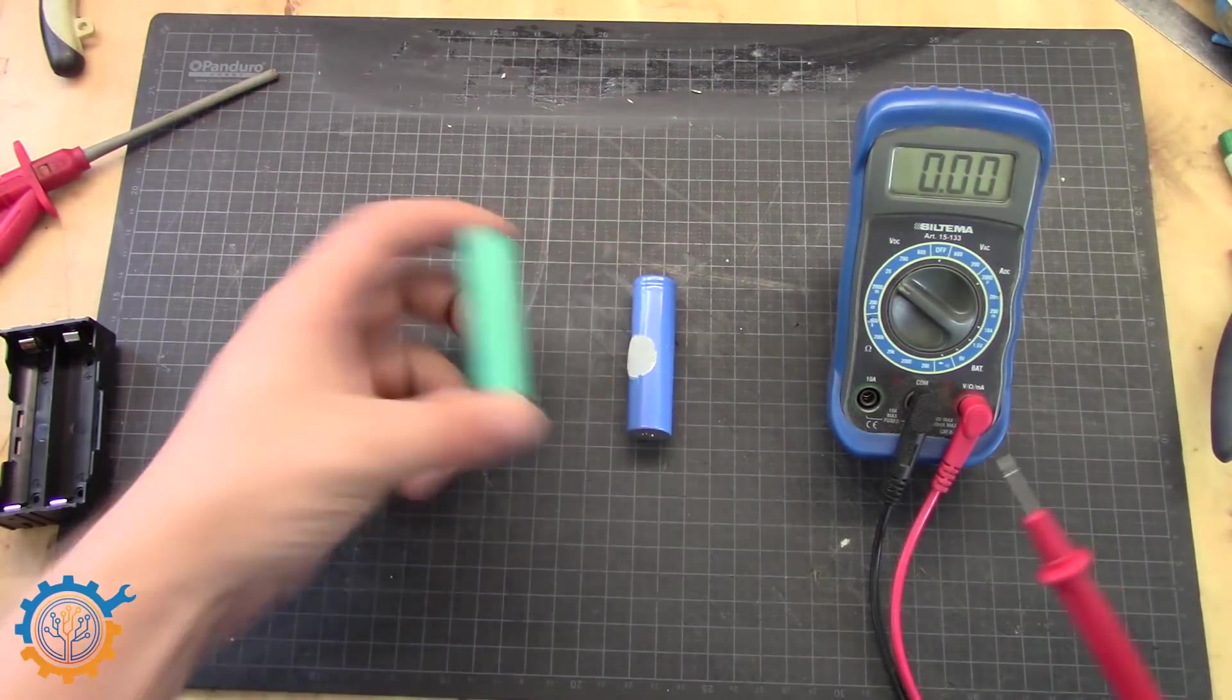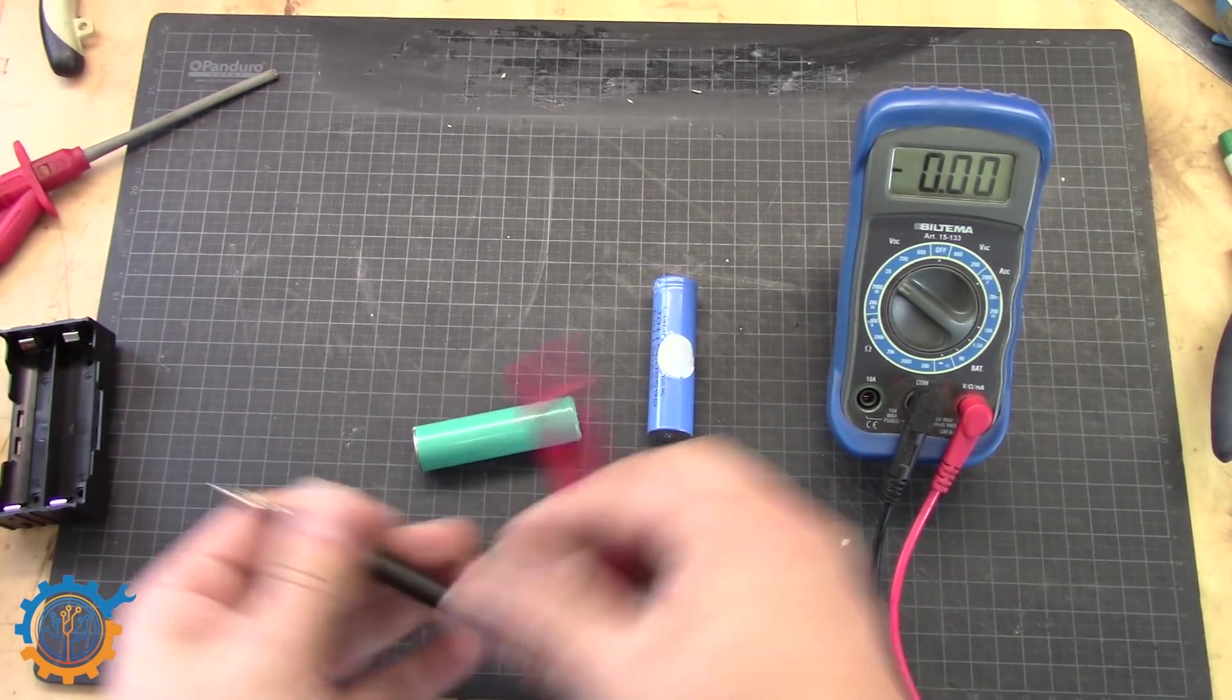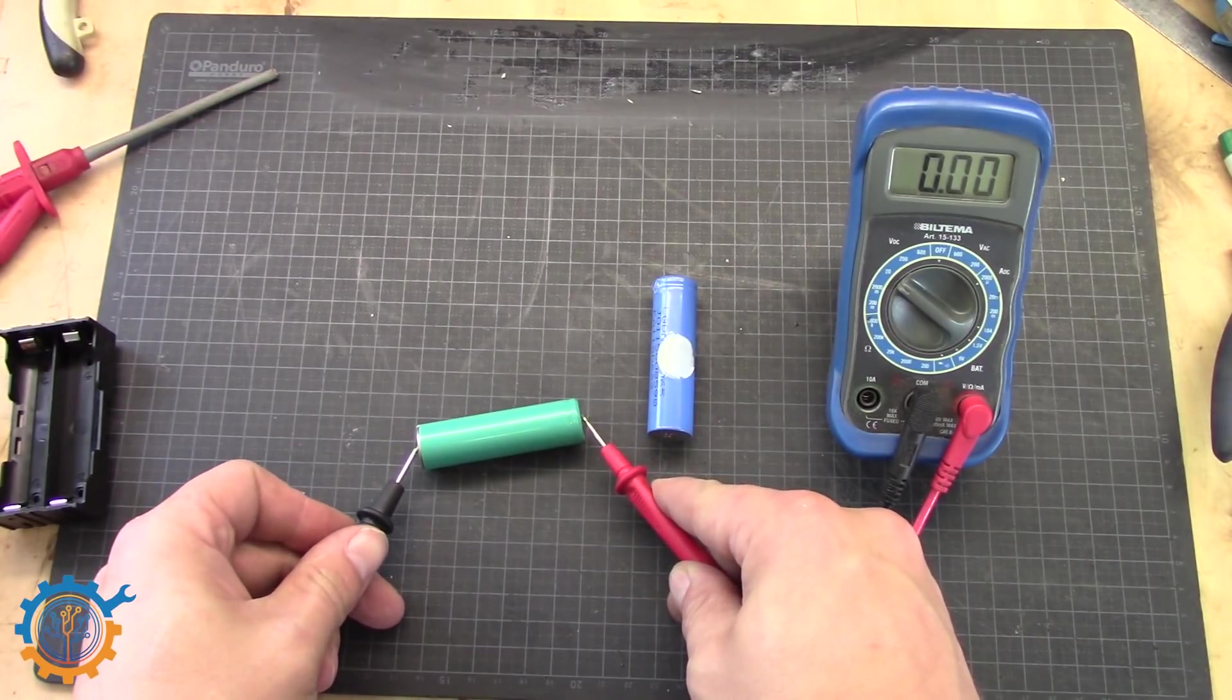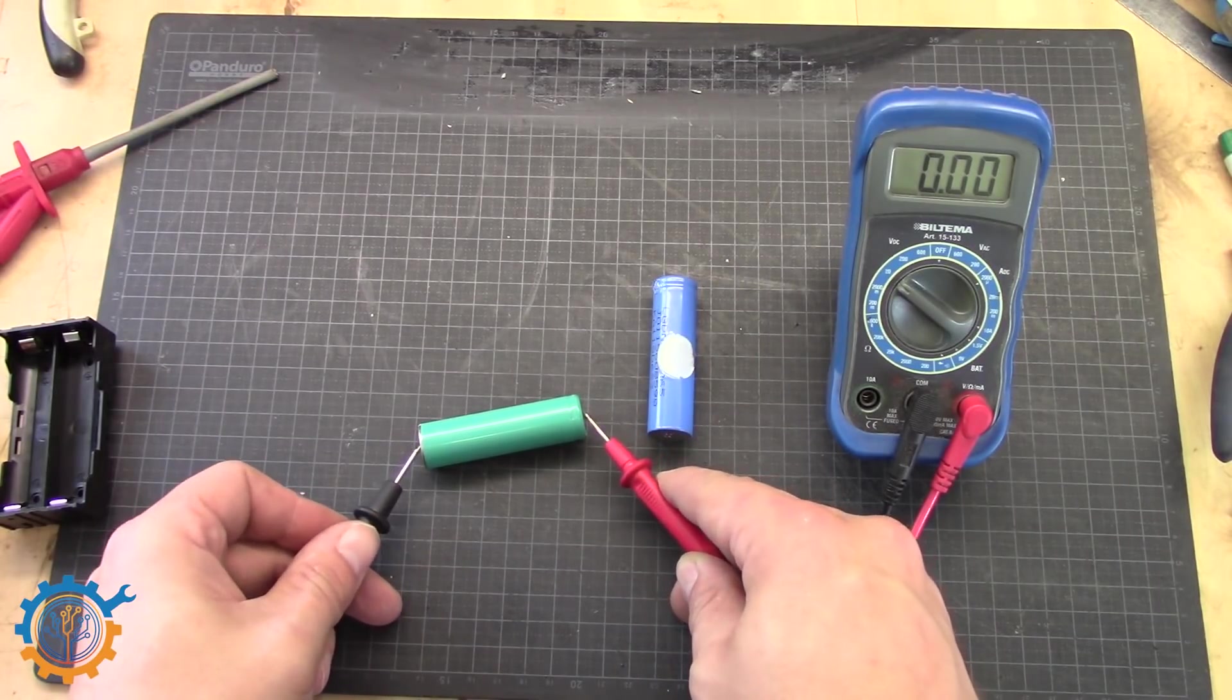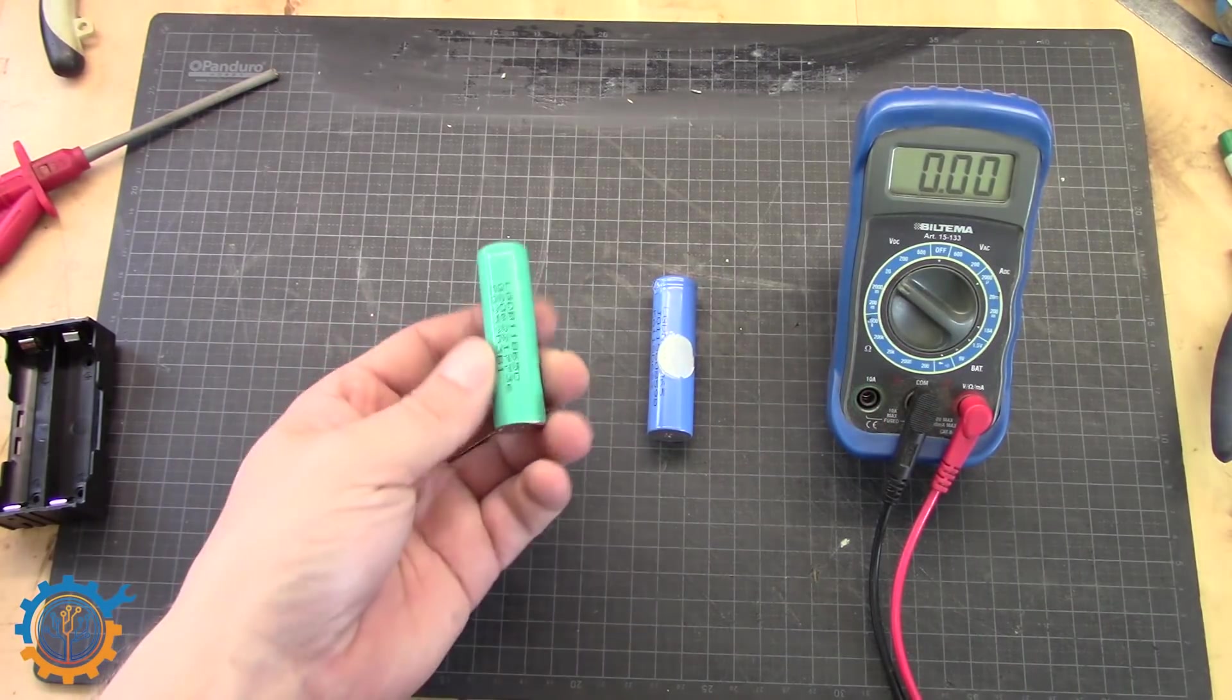So basically if we take for instance this green cell here and measure the voltage. As you can see, there is no voltage at the cell whatsoever. So is this cell dead or is it not dead? That's the good question.